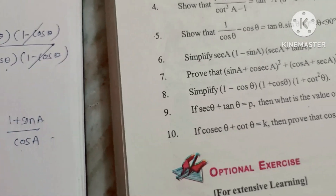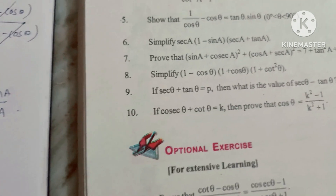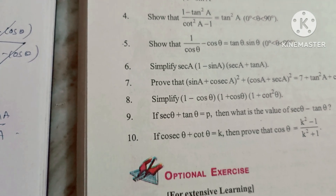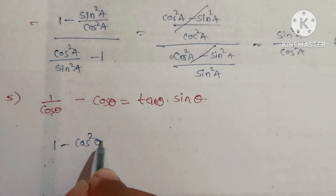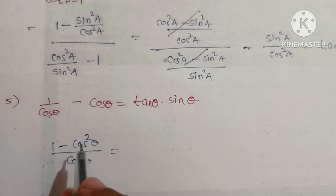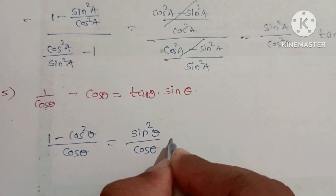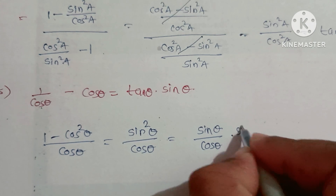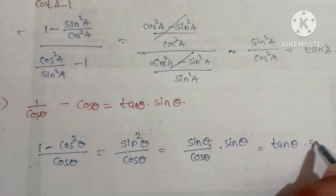Fifth question: Show that 1/cosθ - cosθ = tanθ·sinθ. Take LCM cosθ: (1 - cos²θ)/cosθ = sin²θ/cosθ = sinθ × (sinθ/cosθ) = sinθ × tanθ. Hence proved.